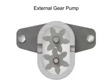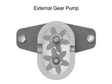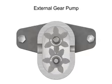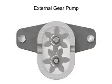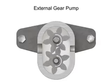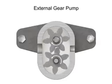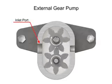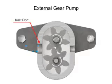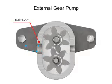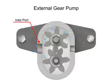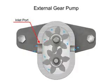As the gears rotate away from each other and come out of mesh, they create an expanding volume on the inlet side of the pump. This creates a vacuum at the inlet port, allowing fluid to flow into the pump.